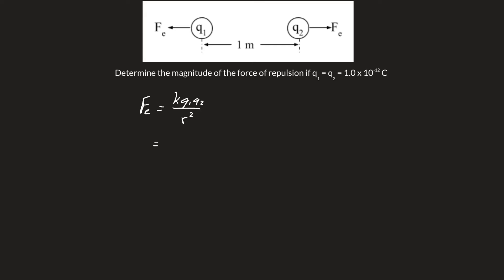The nice part about this is that Q1 and Q2 are the same, so we're going to substitute our value for K, 9.0 times 10 to the 9 Newtons meters squared per Coulomb squared.